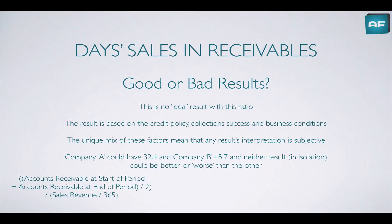So what's a good or bad result for this ratio? This is one of those ratios where there is no ideal result. The result is based on a particular business's credit policy, the collections department's success, and even business conditions — and the unique mix of these factors means any result interpretation is subjective. For instance, company A could have 32.4 days and company B could have 45.7 days, and neither result, in isolation, could be considered better or worse than the other. You would need to look at other factors to determine whether this is a good or bad result.